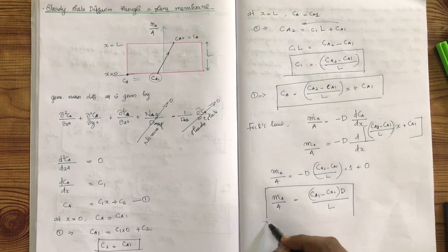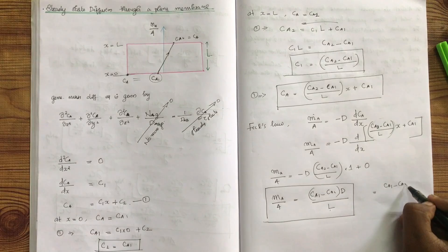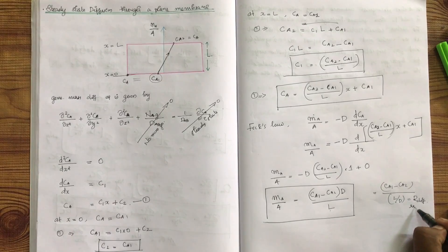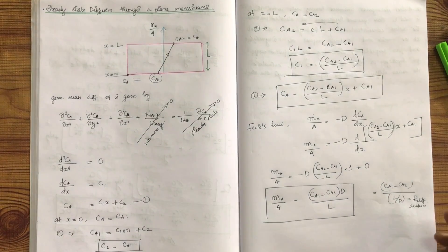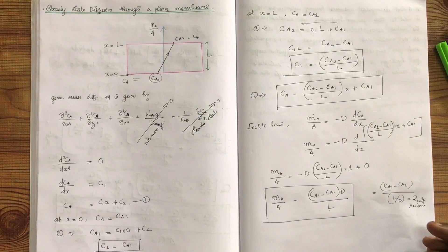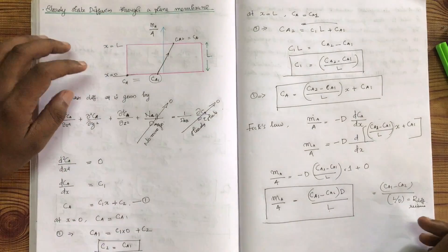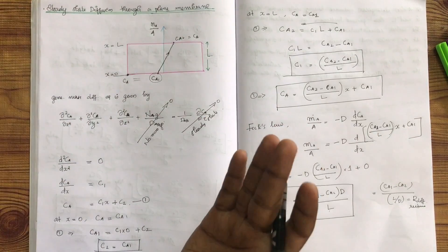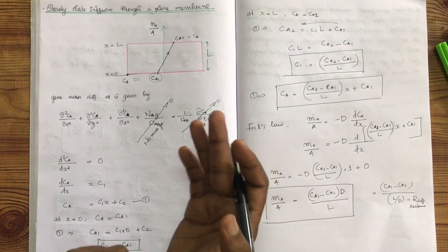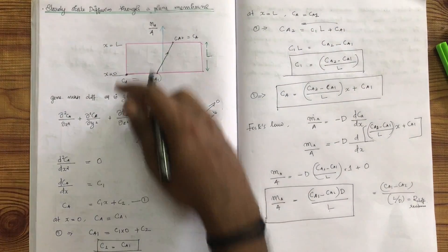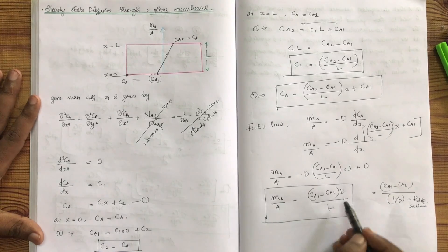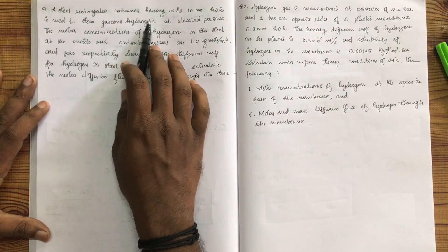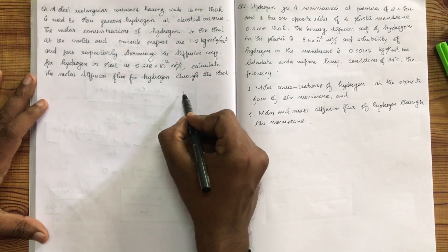Therefore, mA/A = D · (cA1 − cA2) / L. This can be written as (cA1 − cA2) divided by (L/D), where L/D represents the diffusion resistance. The mass flux equals the concentration difference divided by the diffusion resistance.